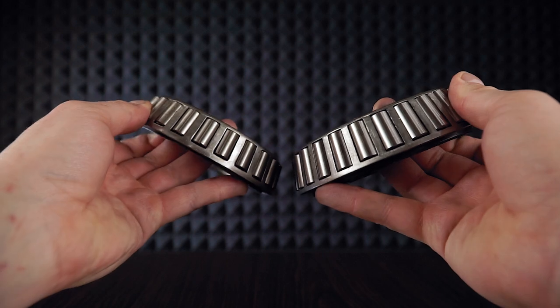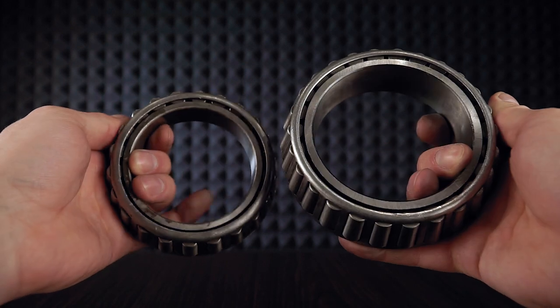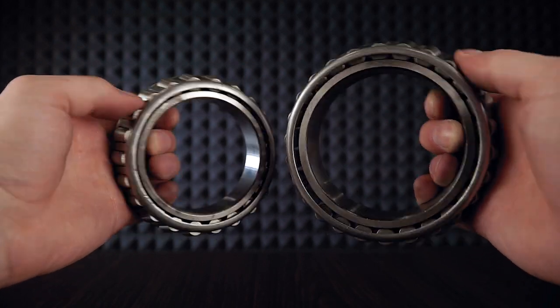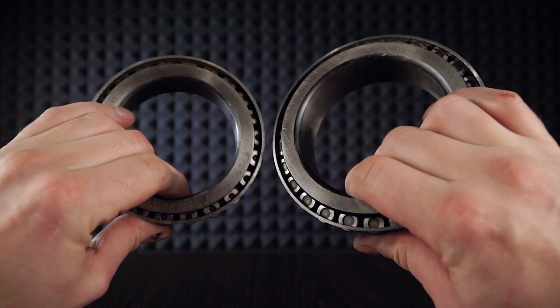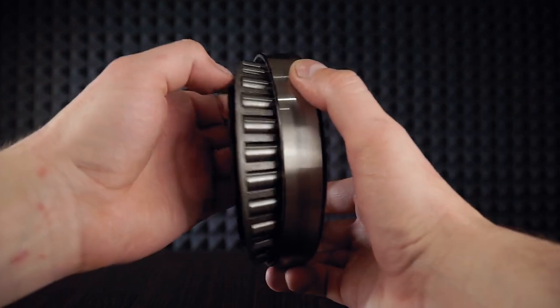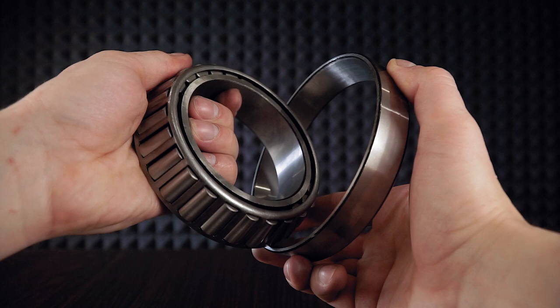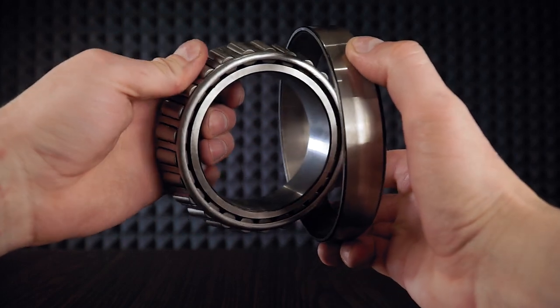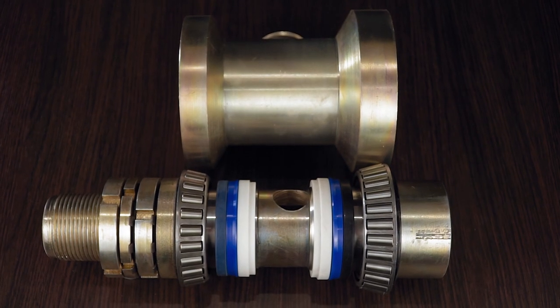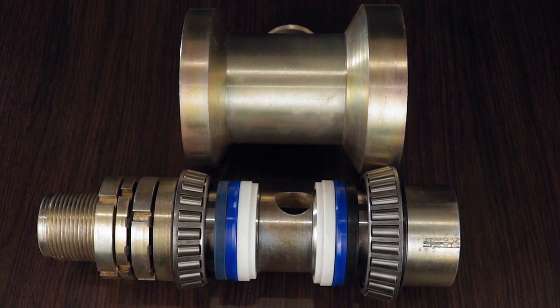Now let's talk about bearings. In this swivel are used tapered roller bearings. They are able to withstand heavy shocks and vibrations. They also perceive the weight of the drill string and the pressure exerted on the bed. In this design, there is no shaft play relative to the body.